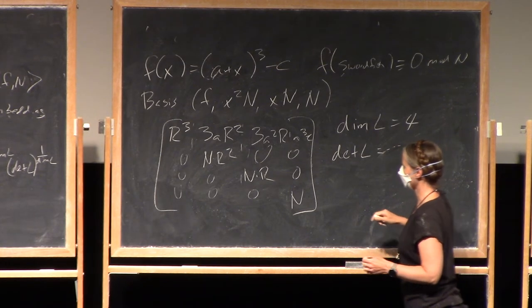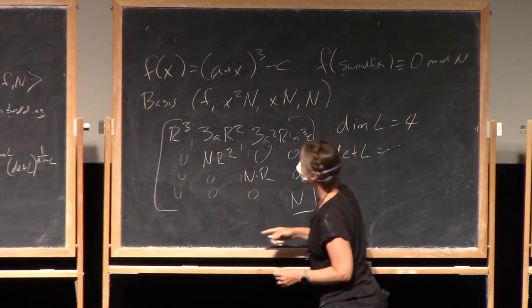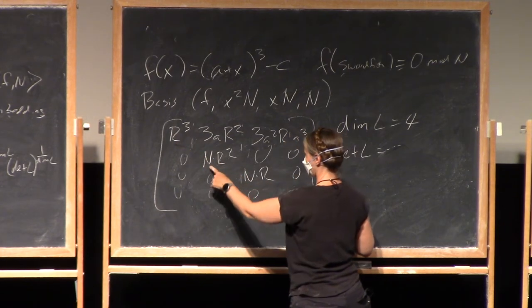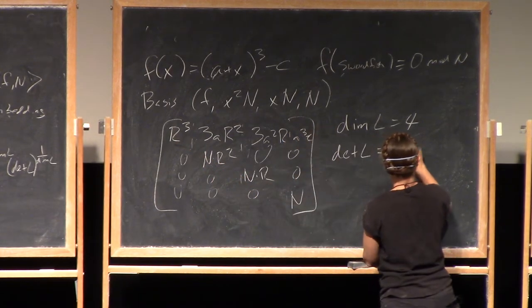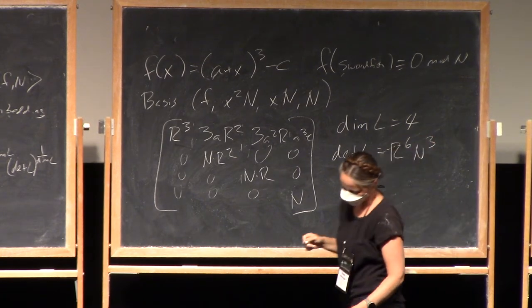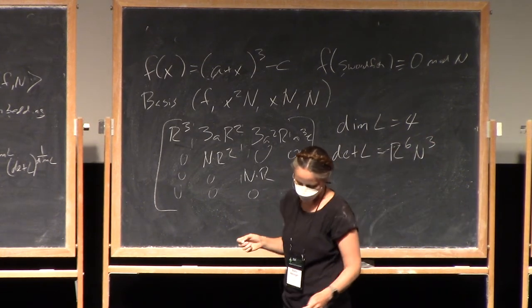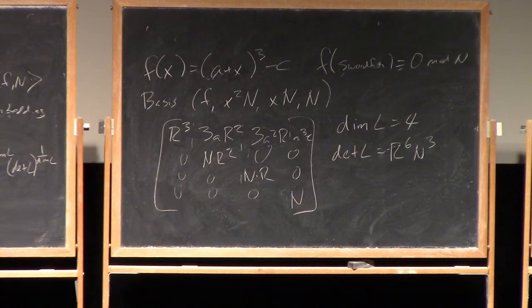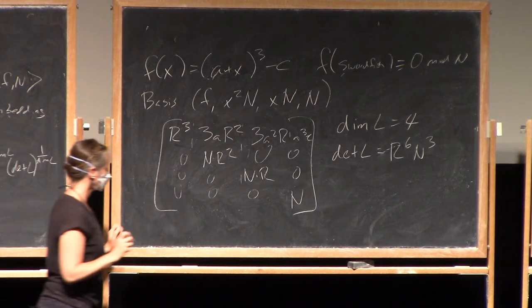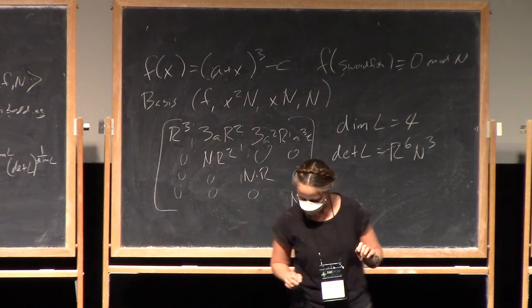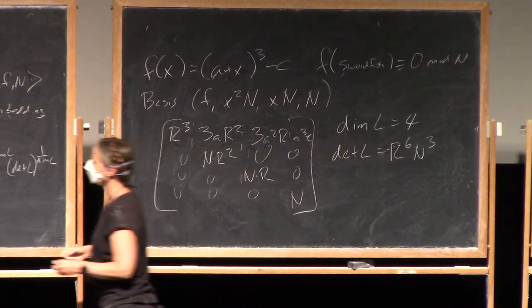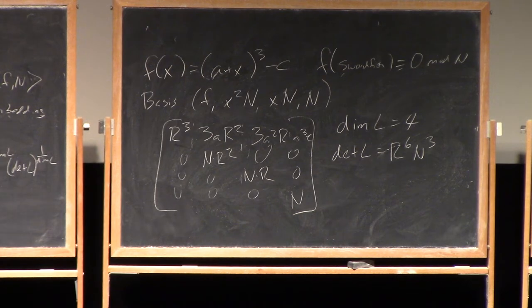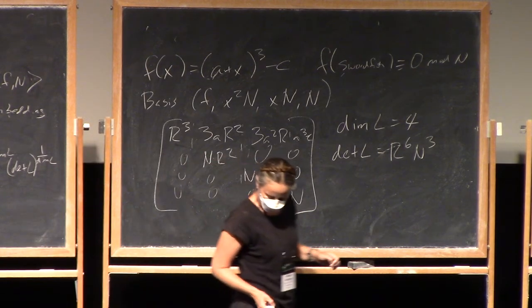So the determinant is just the product of the diagonals. So we've got r to the sixth n cubed. And I'm going to appeal to four being small and say that square root of four times two to the four is not something that we really need to worry about with RSA size numbers. So I'm just going to drop it. Also, these approximation factors go away in such small dimensions.